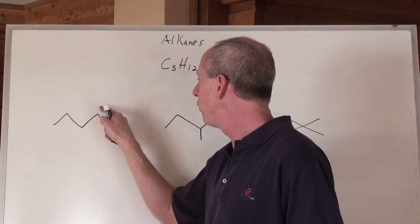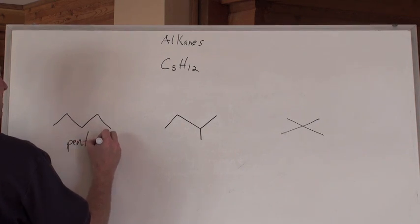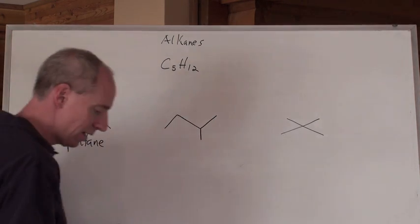That is one, two, three, four, five, and that is going to be longest continuous chain making pentane. So that is pentane right there.